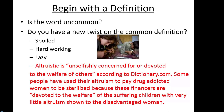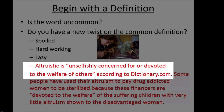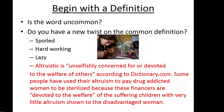A third approach is to begin with a definition. Ask yourself: is the word uncommon? Do you have a new twist on a common definition — words such as spoiled, hard-working, or lazy? For example, 'altruistic' means 'unselfishly concerned for or devoted to the welfare of others,' according to dictionary.com. Some people have used their altruism to pay drug-addicted women to be sterilized, because these financiers are 'devoted to the welfare of the suffering children,' with very little altruism showing toward the disadvantaged women — a new twist on a common definition.